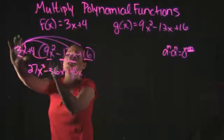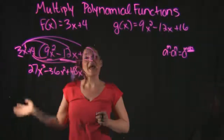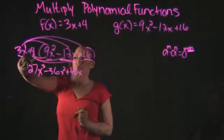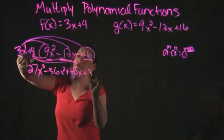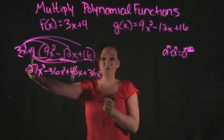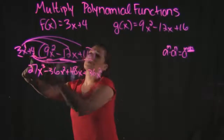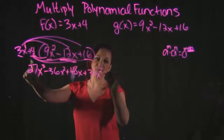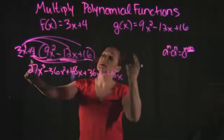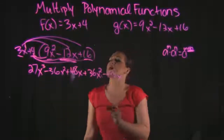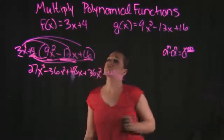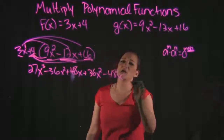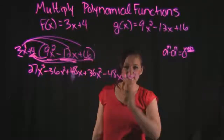Now we're going to take the 4 and distribute it to everything in the second polynomial. 4 times 9x squared: 9 times 4 is 36, tack on the x squared — giving 36x squared. 4 times negative 12x: 4 times negative 12 is negative 48, tack on the x — giving negative 48x. And our last multiplication: 4 times 16 is 64.